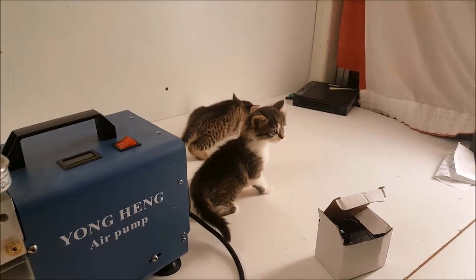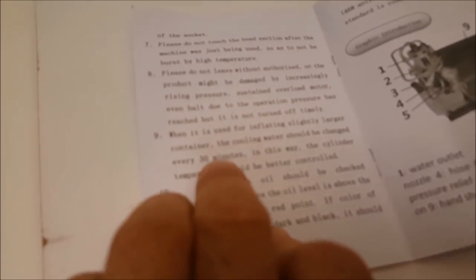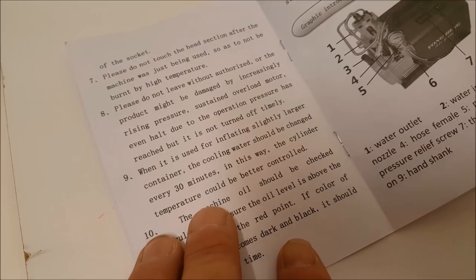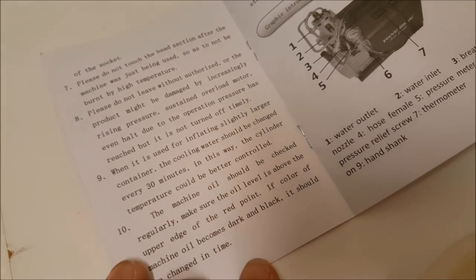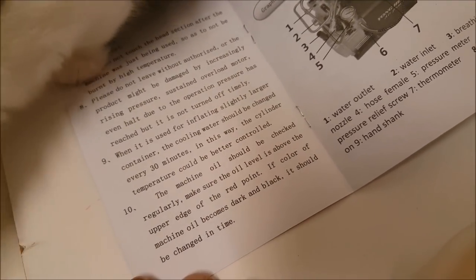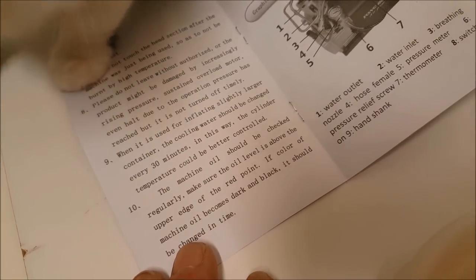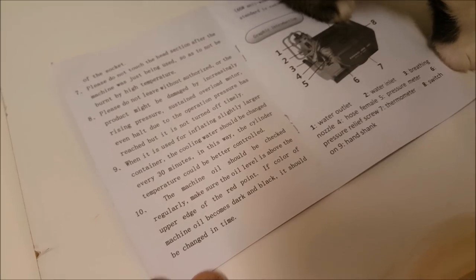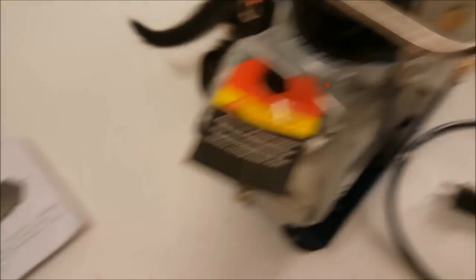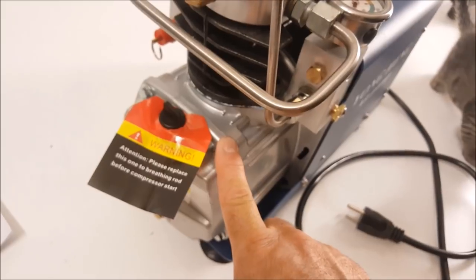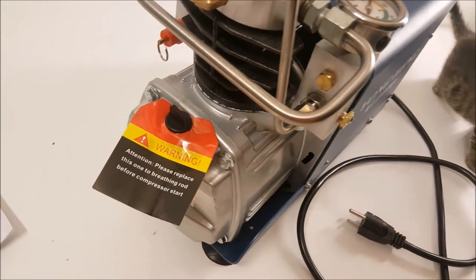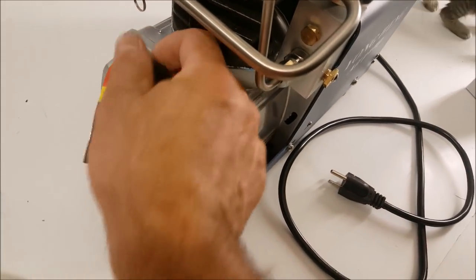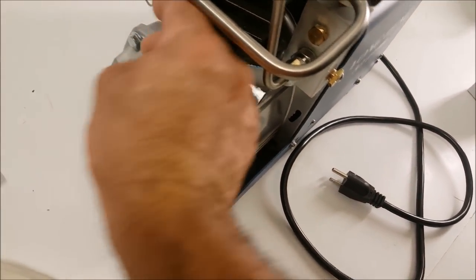So, this says, when it is used for inflating slightly larger containers, the cooling water should be changed every 30 minutes. That's good to know. The machine oil should be checked regularly. Make sure the oil level is above the upper edge of the red point. If the color of the machine oil becomes dark and black, it should be changed in time. So, the thing is, what you should actually do is change the oil on this every time you run it. That's what the super most anal mechanic would ever do. So you can do that because you've got a giant thing of hydraulic fluid. So, just dump it out and dump it back in every time you run it.